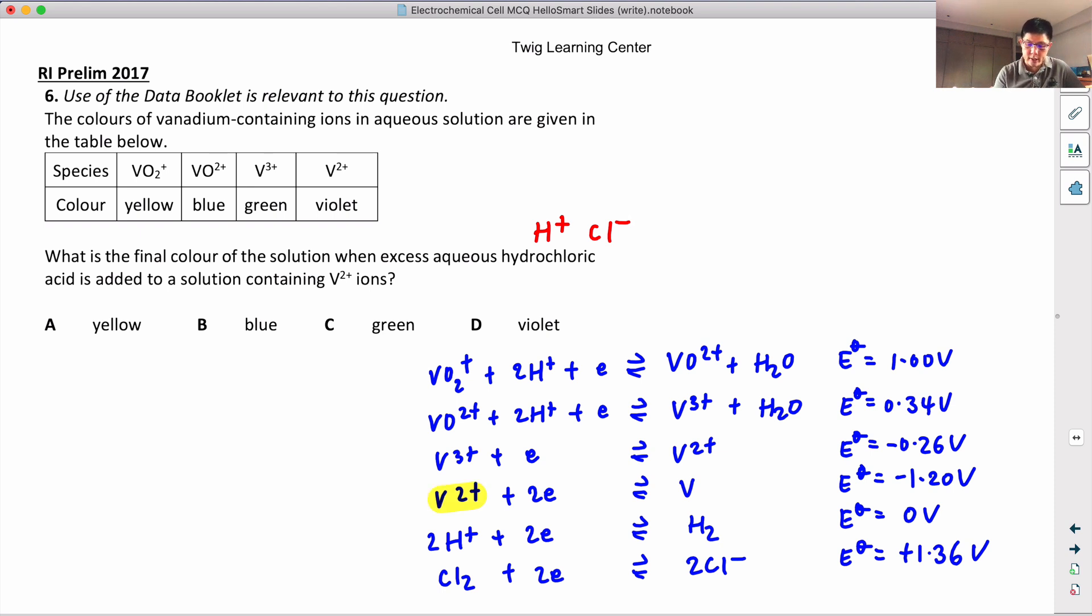Vanadium, there are two parts to it. That's over here and here. So if I chose Cl-, I must always choose the ions on opposite side. So if I chose Cl- over here, I must choose vanadium 2+ over here.